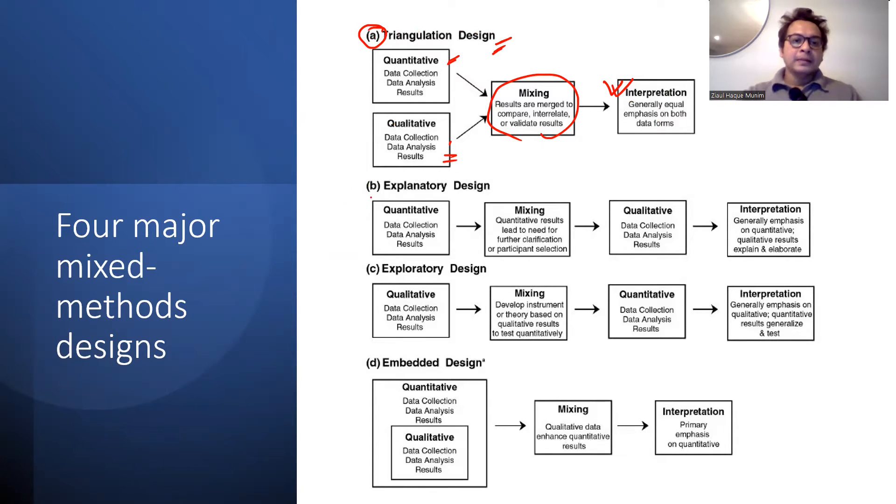Then we have the explanatory study design, where we start with the quantitative part—data collection, analysis, and results. Sometimes the results may lead to the need for further clarification or participant selection. Then we develop a qualitative study design. We found something and want to explain it further, to find reasons why something is like this or why this is associated with that.